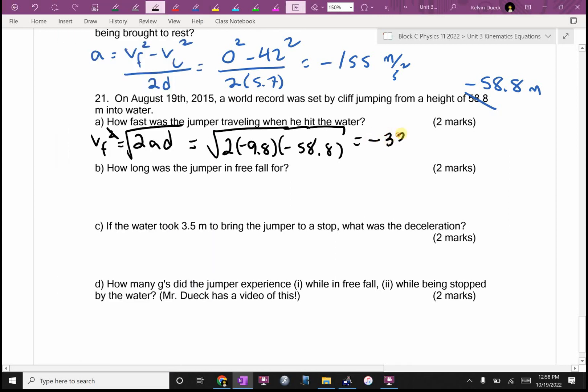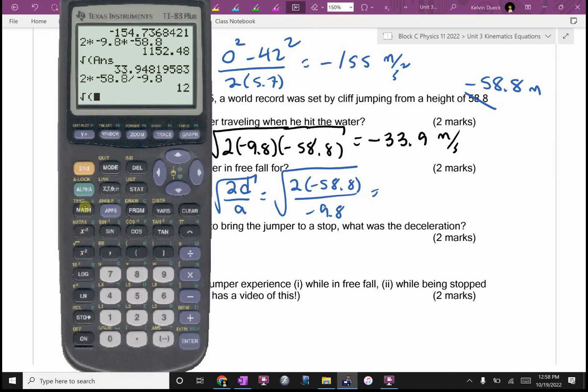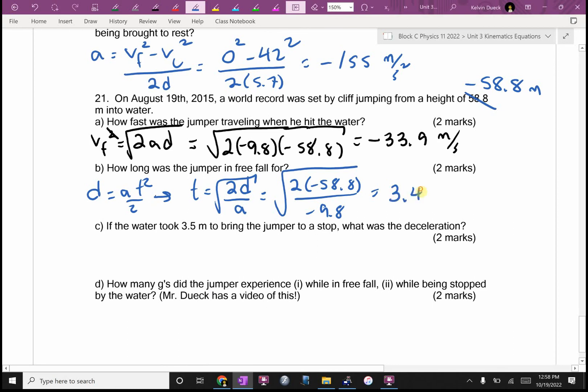How long was the jumper in free fall? I think I would use D equals AT squared over 2. You could also use VF equals VI plus AT. You'd be using your answer from part A to find part B, but that'd work. T equals 2 times D over A square root. The square root of 2 times negative 58.8 divided by negative 9.8. 3.46 seconds.